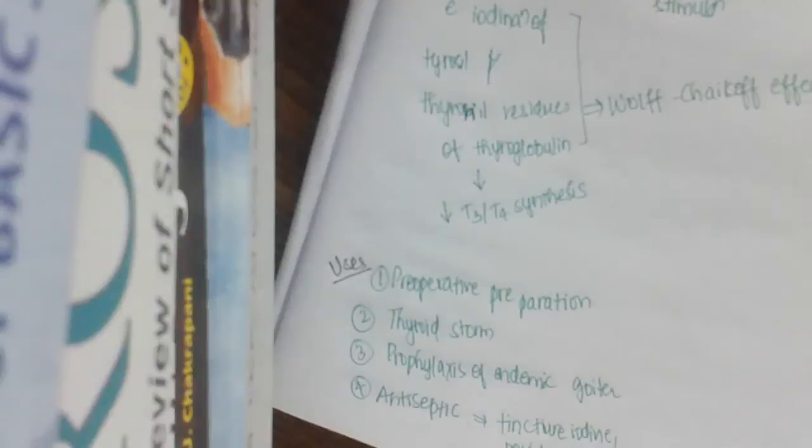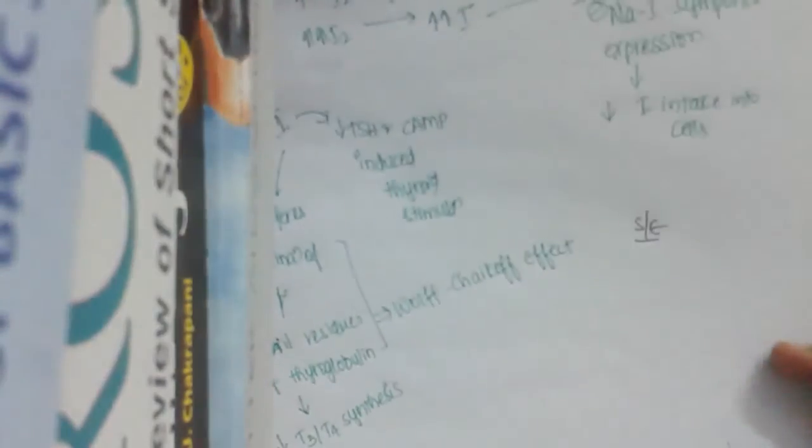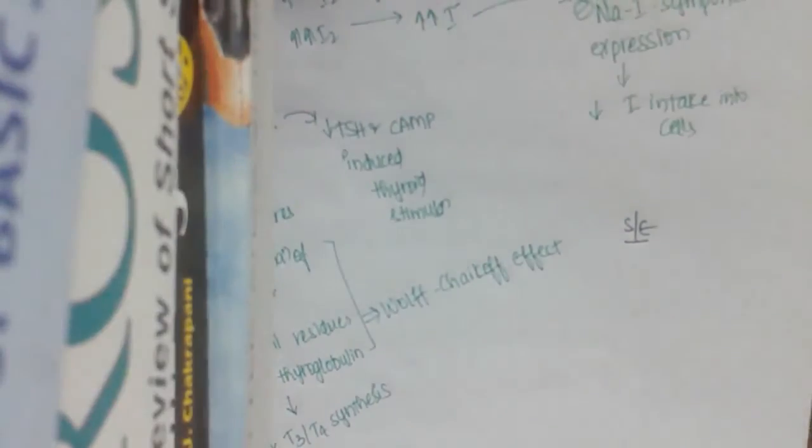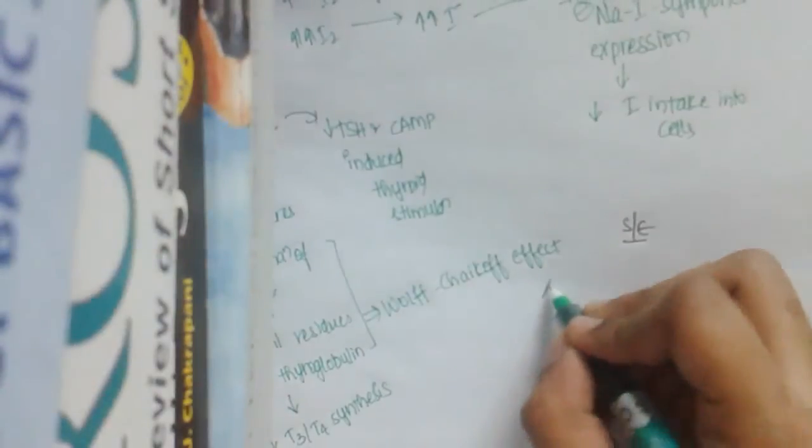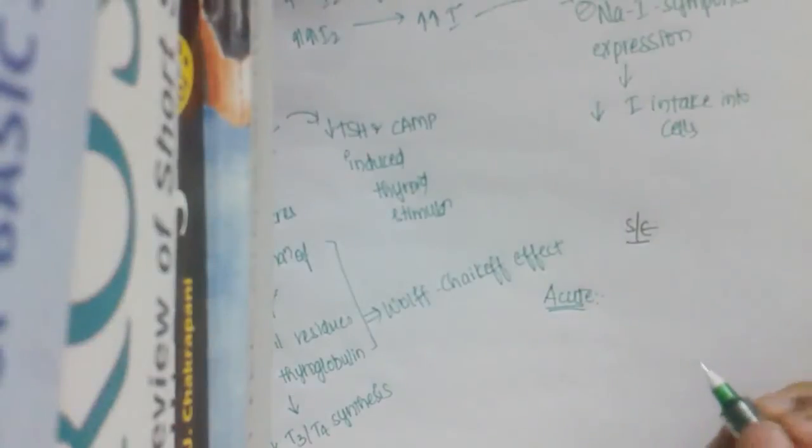What are the adverse effects or side effects of iodine? Side effects of iodine include two reactions: acute reaction and chronic reaction. Acute reactions occur only in individuals who are sensitive to iodine.